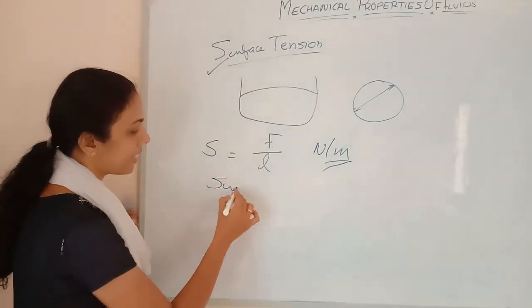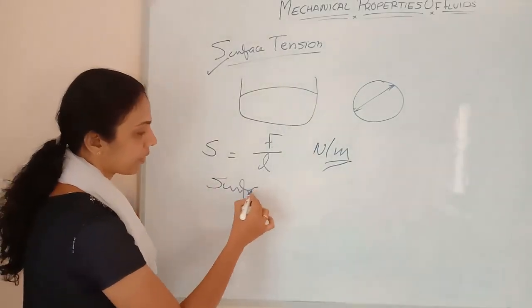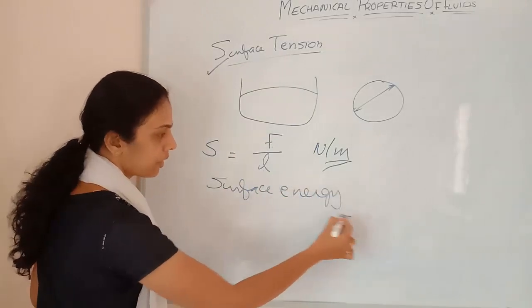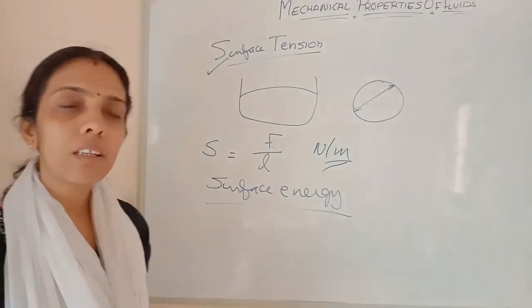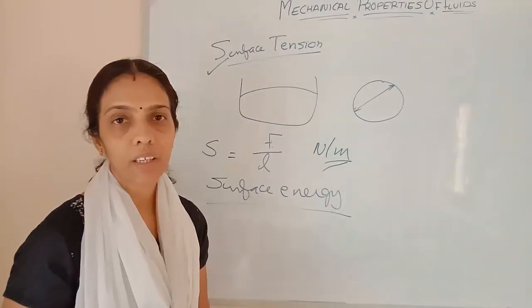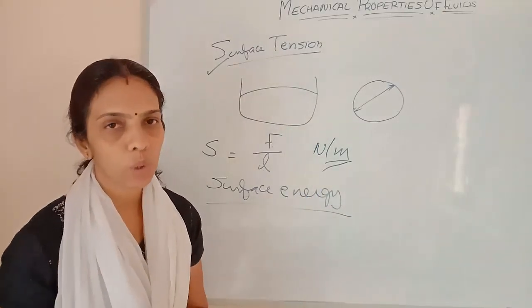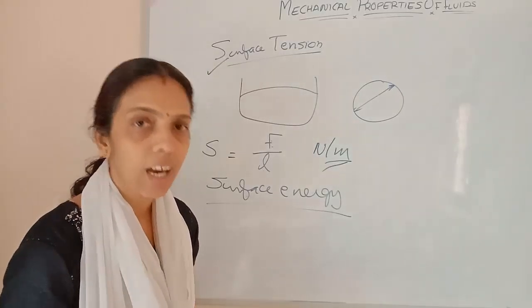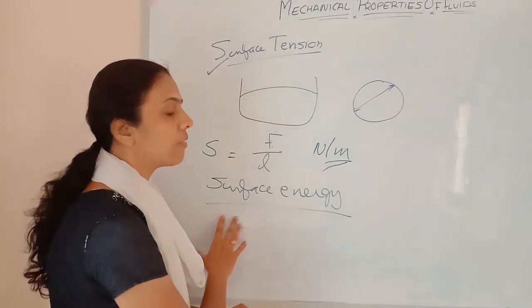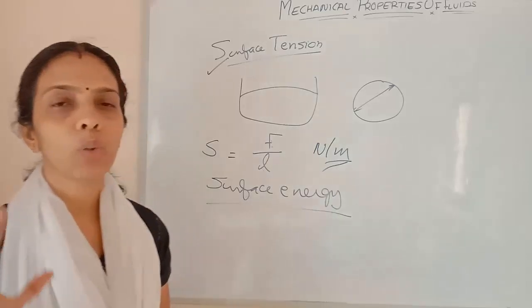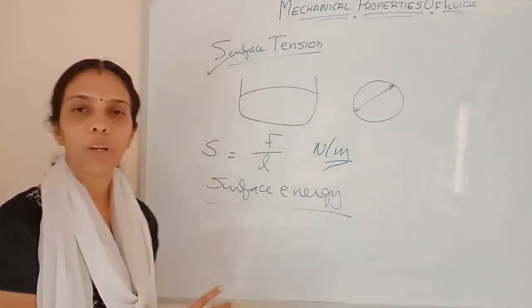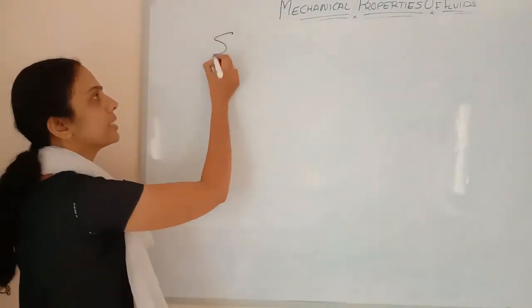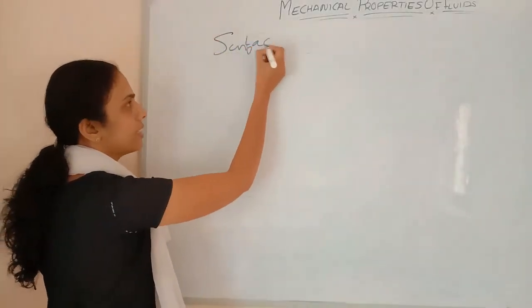Next is surface energy. How can we find out the surface energy? Work done per unit area is called surface energy. Now we are going to find out the formula for surface energy.